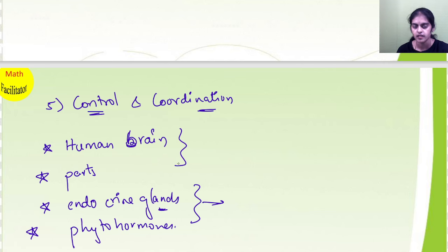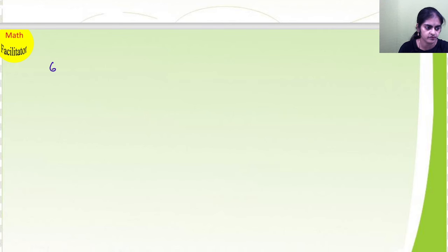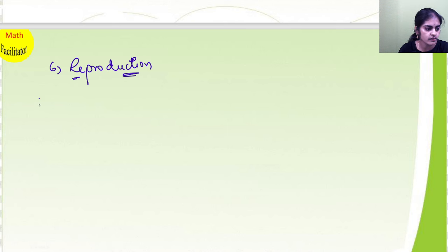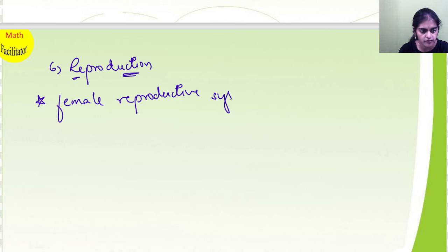All the different types and brain and its function. Let's proceed to the next chapter: reproduction. In reproduction, you will learn the female reproductive system. Please learn the female reproductive system along with diagrams.